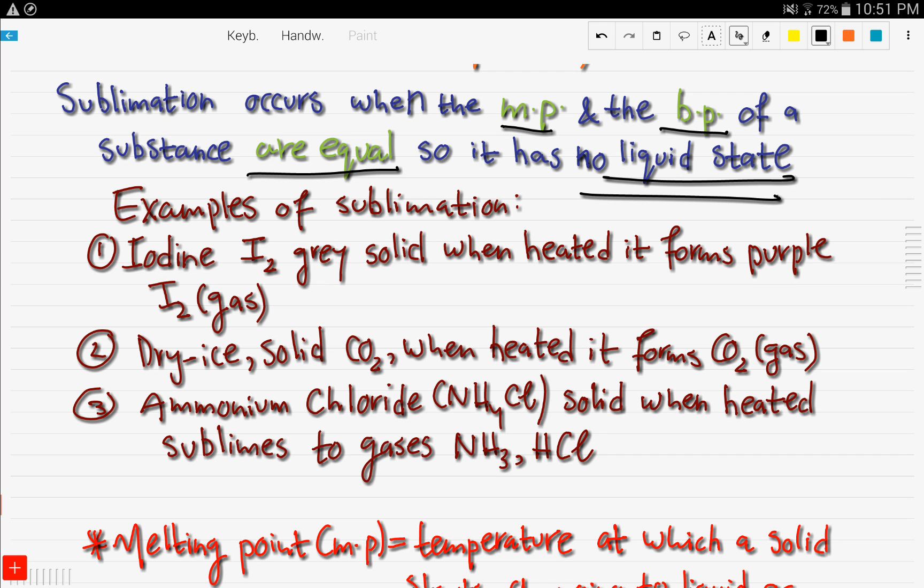Examples of sublimation. Iodine, gray solid. When heated, it forms purple iodine gas. Number two, dry ice, solid CO2. When heated, it forms carbon dioxide gas. Ammonium chloride, NH4Cl solid. When heated, it sublimes to gases, ammonia and HCl. And so these were the three examples of sublimation.